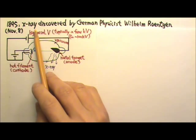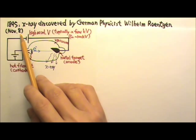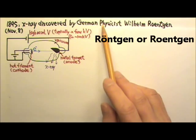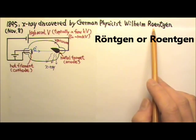X-rays were discovered accidentally on November 8, 1895 by German physicist Wilhelm Röntgen when he was investigating cathode rays.